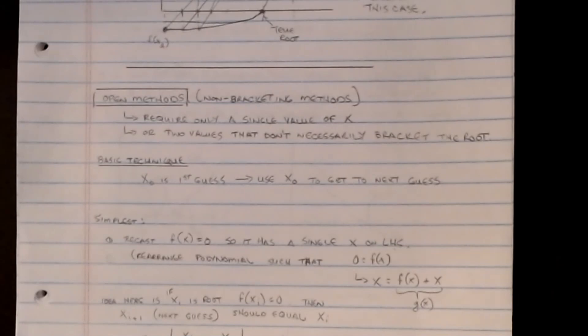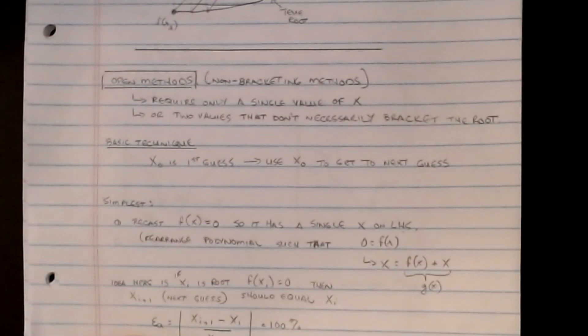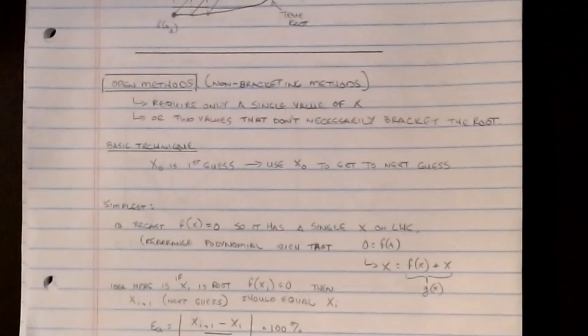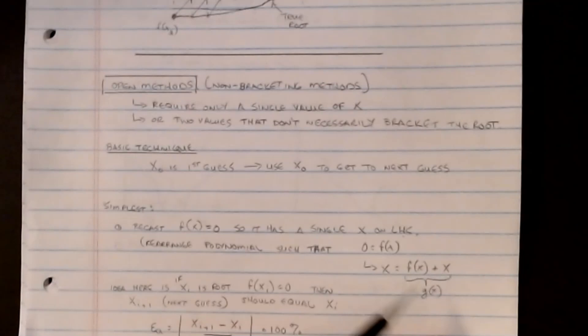The basic technique involved in all of these methods is that we start off with an initial guess called x0. All of these routines use that x0 value to achieve the next guess. The simplest form is: if we recast our function f(x) = 0 so that it has a single value x on the left-hand side, we can rearrange the polynomial such that x equals f(x) plus x.